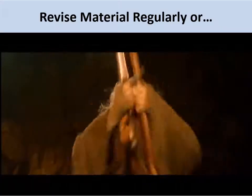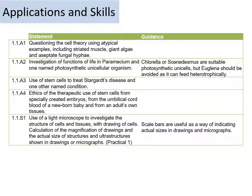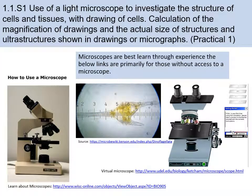Today we'll be focusing on 1.1 U3 — surface area to volume ratio and its limitations on cell size — and 1.1 S1, which covers calculations of magnification. In terms of drawings, that will come up in a later video, but for today we're mostly focusing on magnification. We will be doing some practice, and we have already done some practice in the classroom using a light microscope.